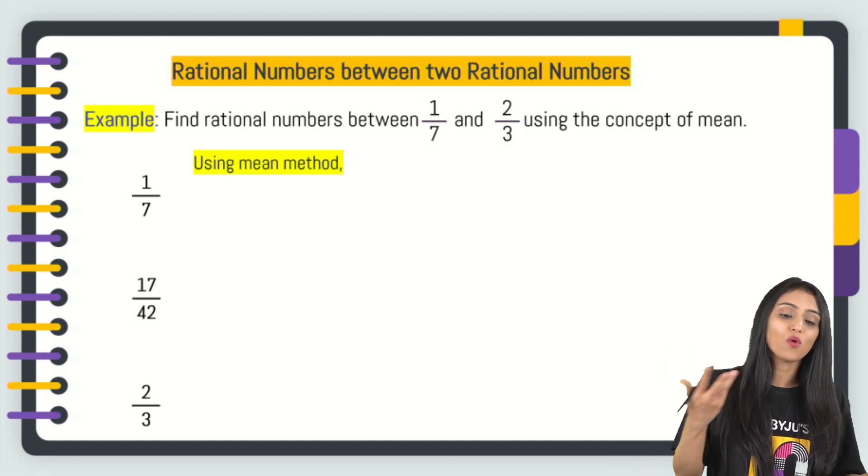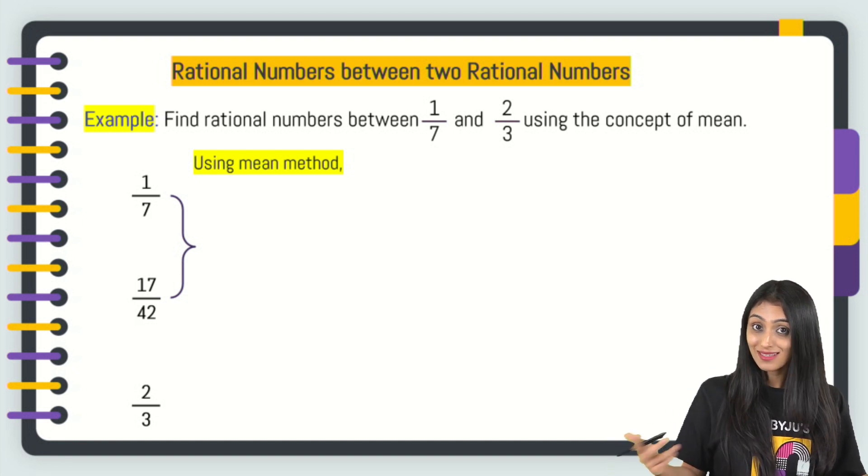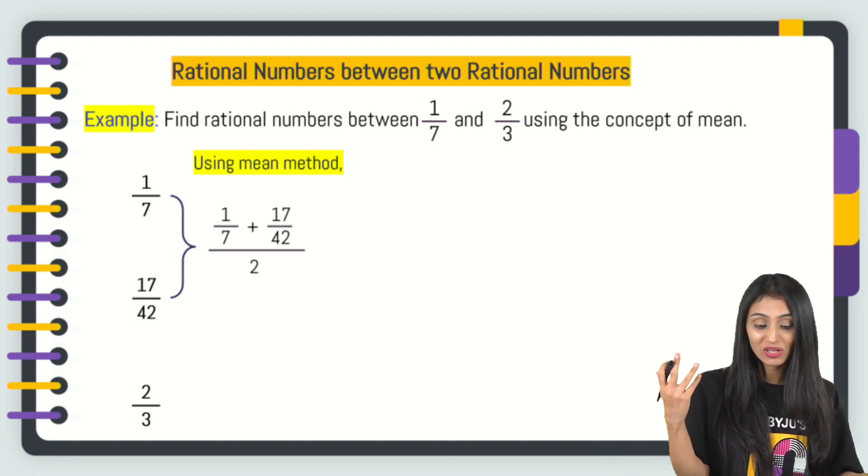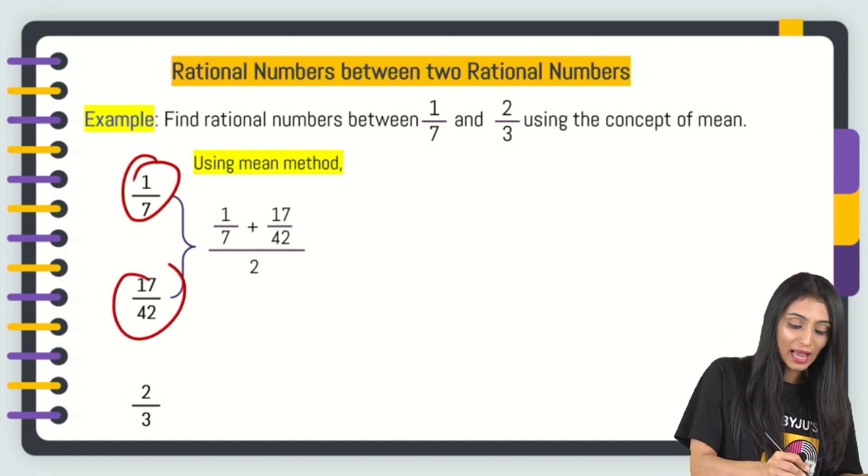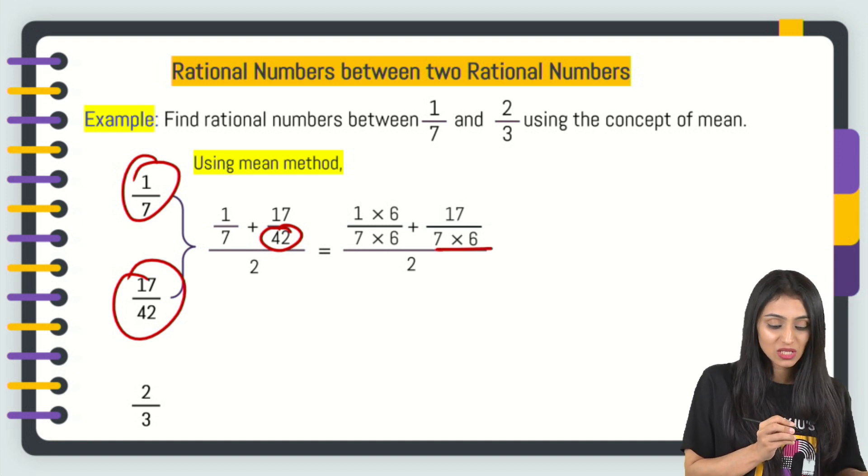Let's suppose I want to find one more rational number between 1 by 7 and 17 by 42. I'll be using the same method like we did for the previous numbers. Let's add them up and divide them by 2. While adding, be careful, this is 42. I can write this as 7 times 6.